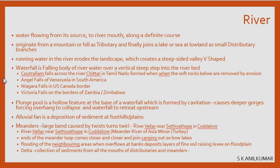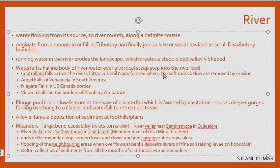Waterfalls form when soft rocks below are removed by erosion. The falling water caves down, creates a bulge, and the softer rocks below get eroded while the harder rock on top remains. Over time the overhang — the harder rock above — also gets broken, and the waterfall moves a little bit back upstream, away from its original position. This is how a waterfall is formed and a plunge pool develops.